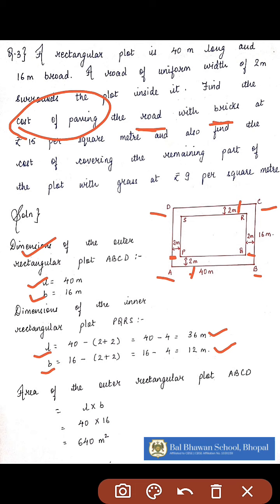So since you have to pave it with bricks, we have to find out the area of the road. So let's find out. The area of the outer rectangle will be length into breadth, that is 40 into 16, that is 640 meter square.